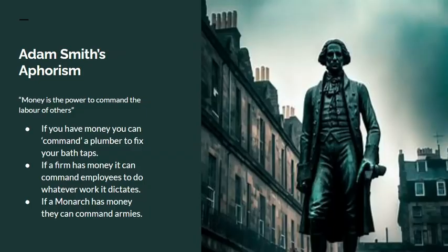Adam Smith said that money is a power to command the labor of others. If you've got money you can command a plumber to fix your bath; if a firm has money it can command employees to do whatever it wants. But that only became necessary once labor rents were commuted into money rents.